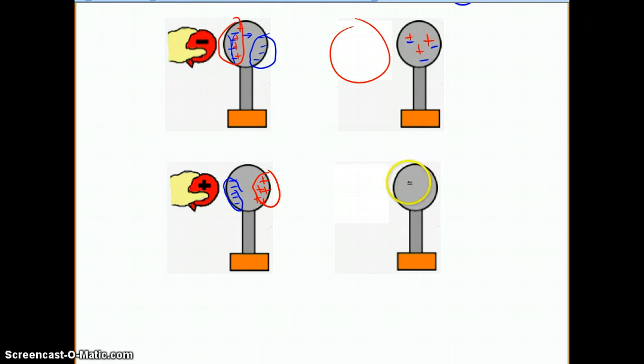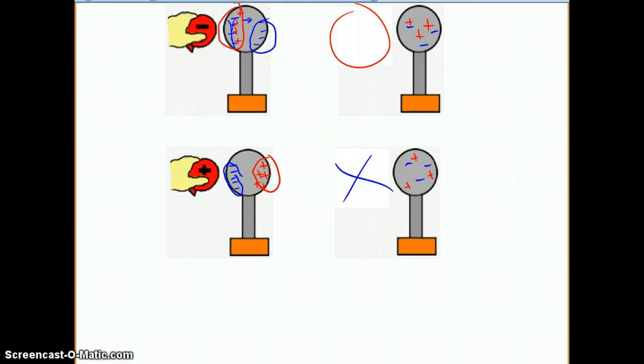But again, once you take the balloon away, the balloon's gone, so now the charges will simply, since it's a conductor, they'll spread out. Now since we have equal amounts, they'll just spread out equally in the conductor. If we did have an excess of one or the other, the excesses would try to go to the outside of the sphere. So that's how charge works in a conductor and an insulator.